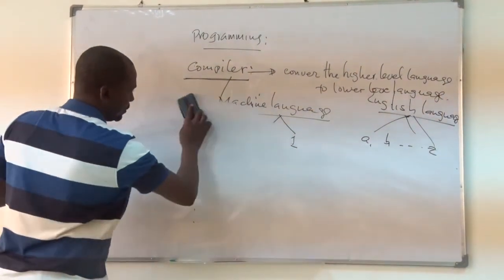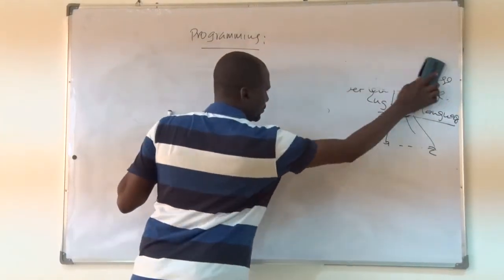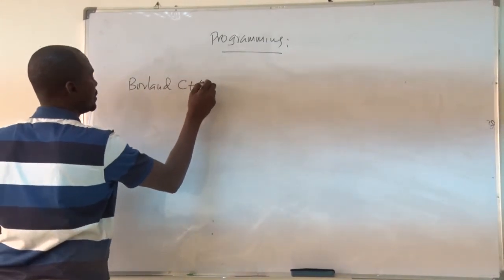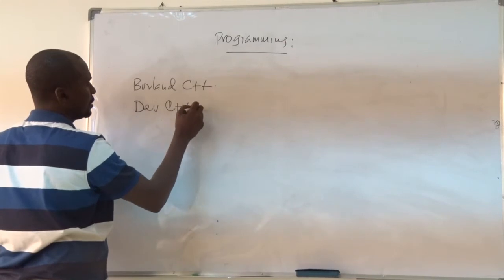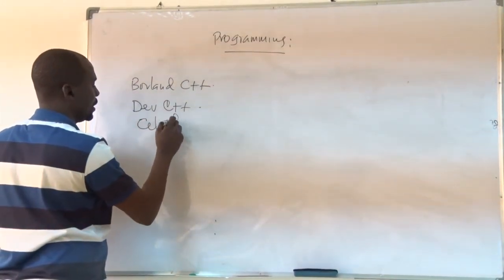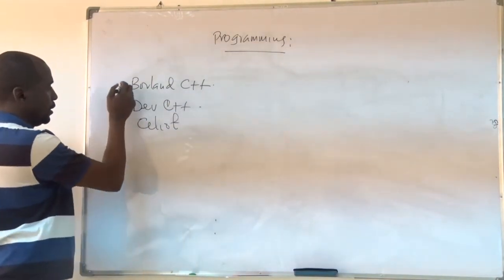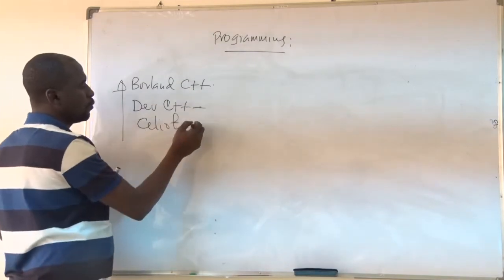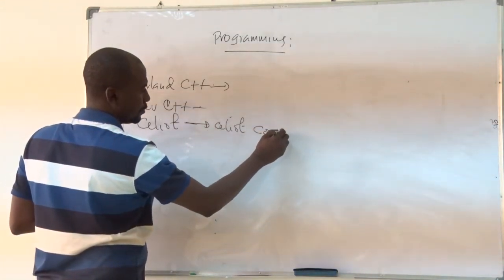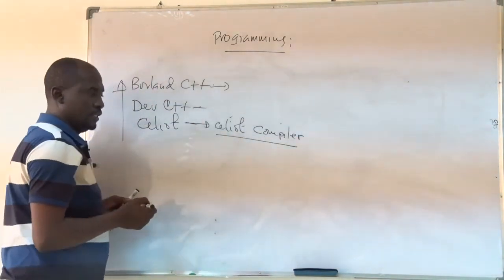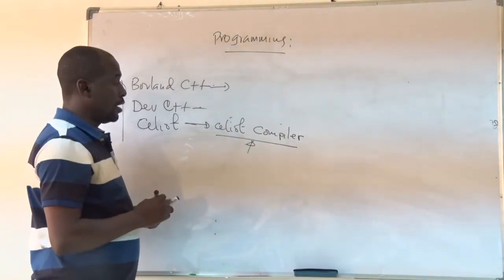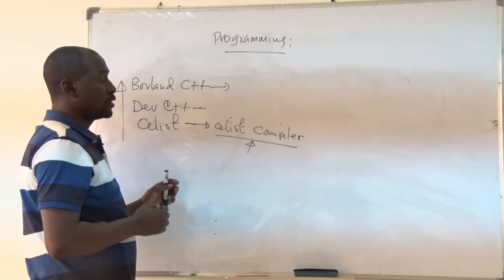Since we are going to use C++, there are many compilers available for C++. You may use Borland C++, Dev C++, Code::Blocks, or the Seliot C++ compiler. For this class, we are going to use the Seliot compiler. The good news is that the Seliot compiler was developed at this university — the University of Dodoma — so this is our own compiler which will compile our programs in C++.